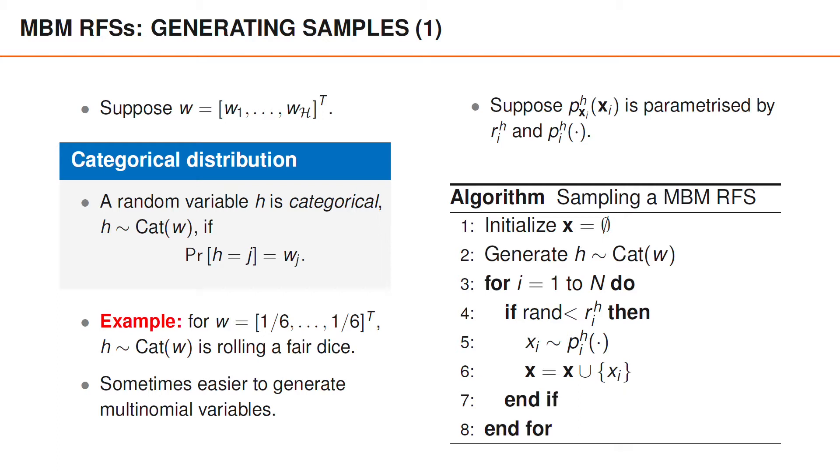For every i, we generate the random number RAND, uniformly distributed between 0 and 1, and check if RAND is smaller than r_H^i. If it is, we then generate the vector x_i from p_H^i and add that to our set X.